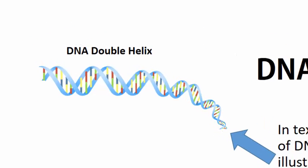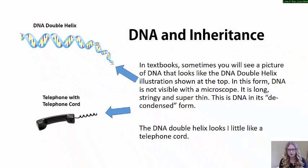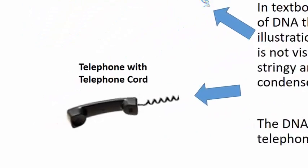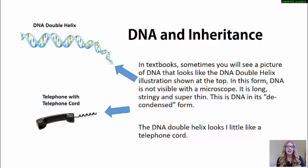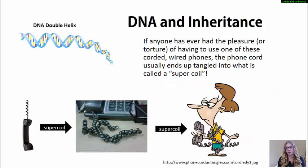In textbooks, sometimes you will see a picture of DNA that looks like this top picture here — this is the DNA double helix, showing how DNA would look if you stretched it out. In this long, super-thin form it is actually not visible even under a microscope. This form looks somewhat similar to a telephone cord, which can end up tangled into what is called a supercoil — we see the supercoil formed here.